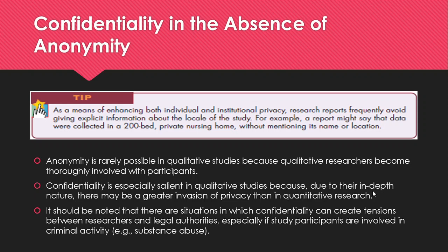It should be noted that there are situations in which confidentiality can create tensions between researchers and legal authorities, especially if study participants are involved in illegal or criminal activities such as substance abuse. To avoid the possibility of forced involuntary disclosure of sensitive research information, researchers in the United States can apply for a Certificate of Confidentiality from the National Institutes of Health. A certificate allows researchers to refuse to disclose identifying information on study participants in civil, criminal, administrative, or legislative proceedings at the federal, state, and local level.